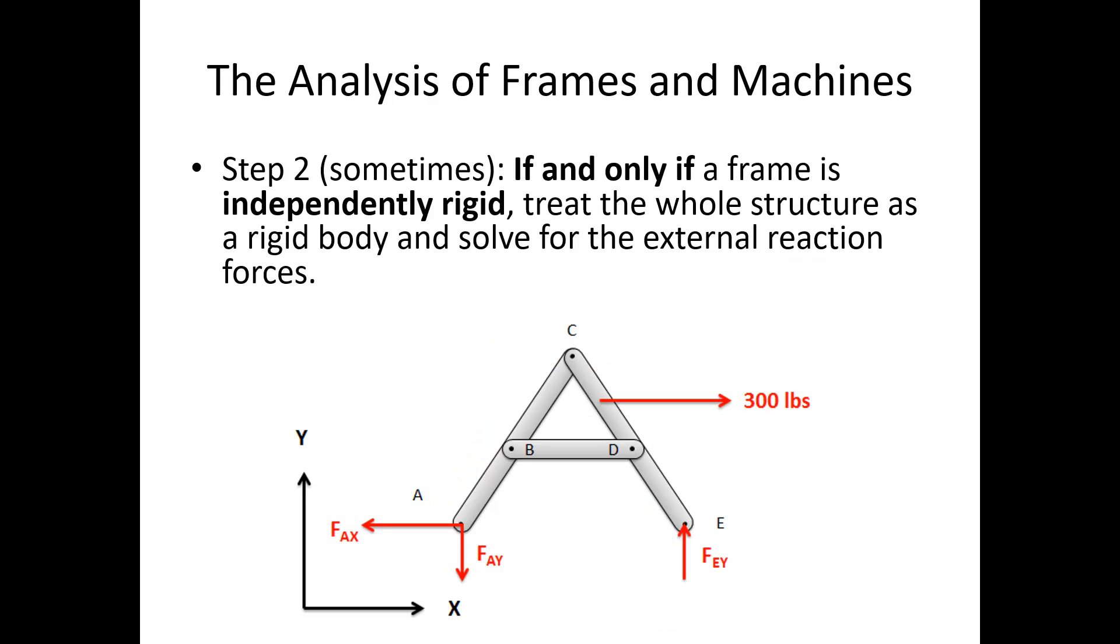Step two, if and only if a frame is independently rigid, we treat the whole structure as a rigid body and solve for the external reaction forces. In this case, I've got a pin joint connection at A, so I've got a force in the X and force in the Y, and then a roller joint at E, so I have a force in the Y direction only at point E. If I solve for some of these external reaction forces, it's going to make later analysis easier.